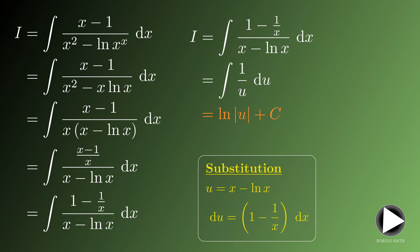Lastly, we substitute back the substitution for u, which is x minus ln x, to give us the value of the integral as the ln of the absolute value of x minus ln x plus c.